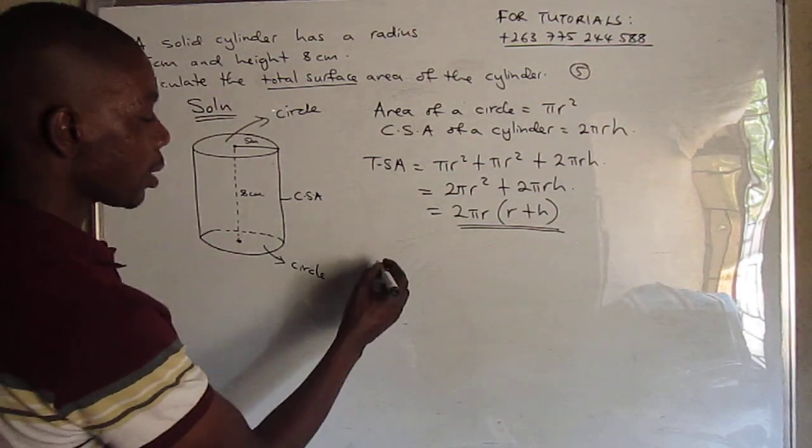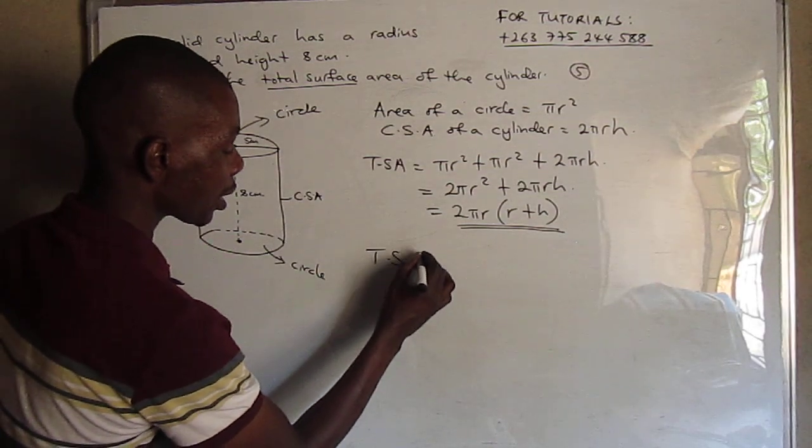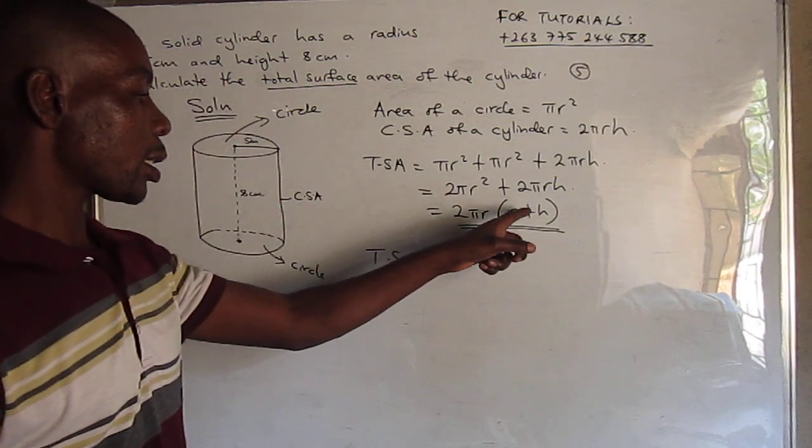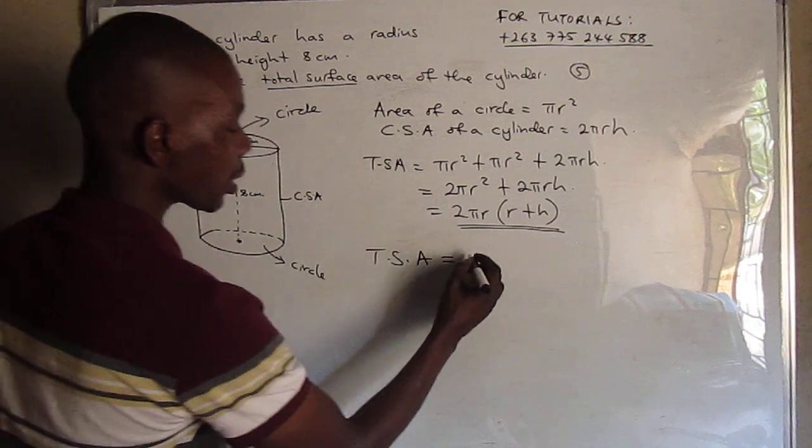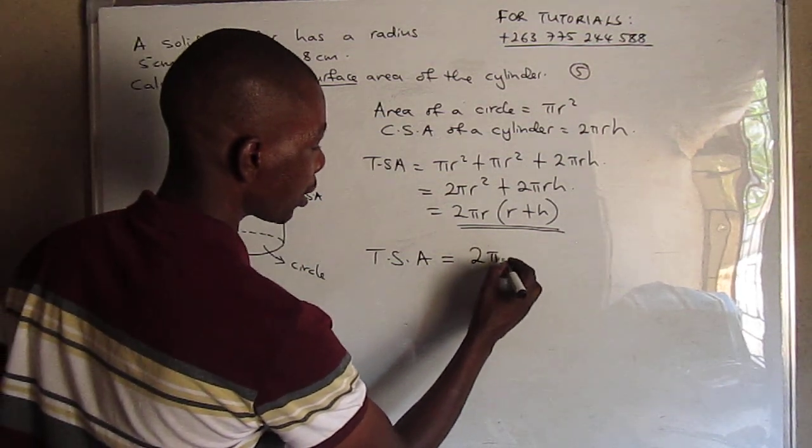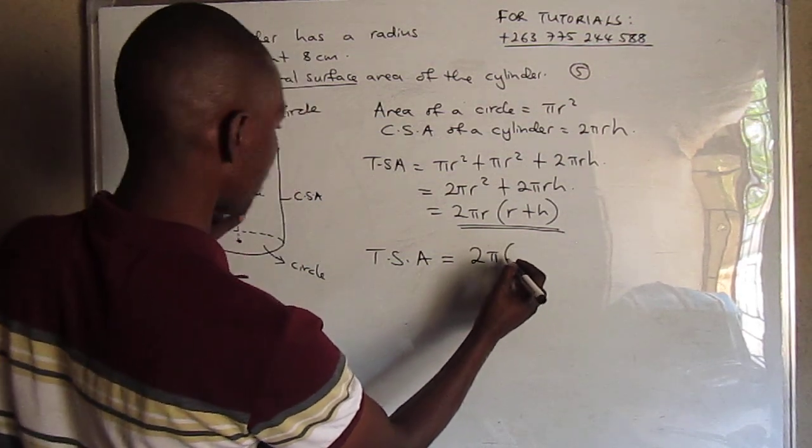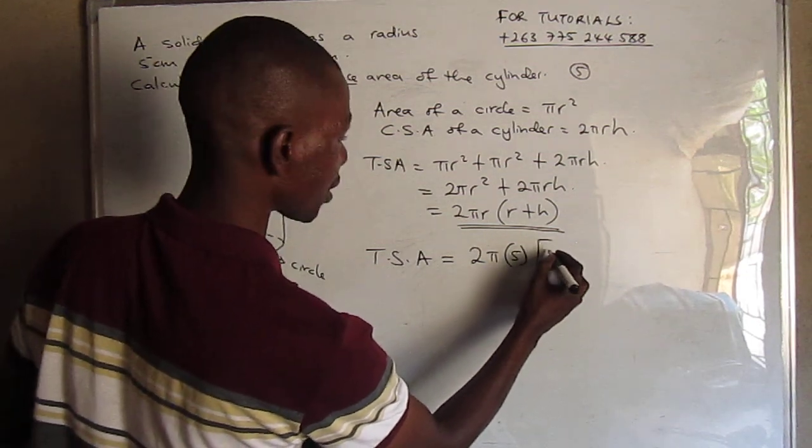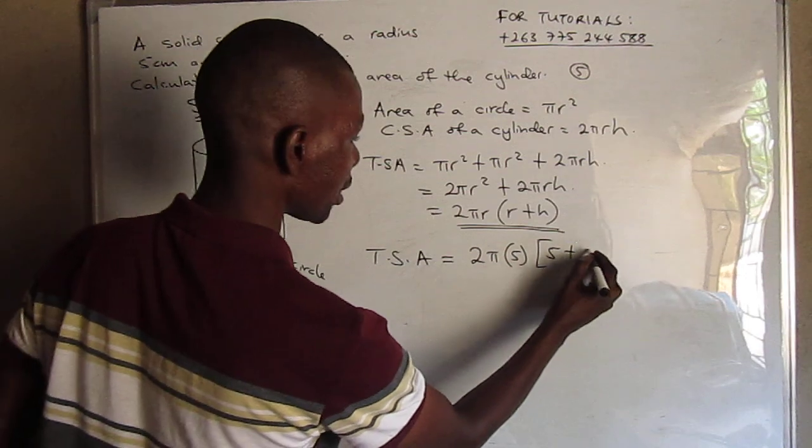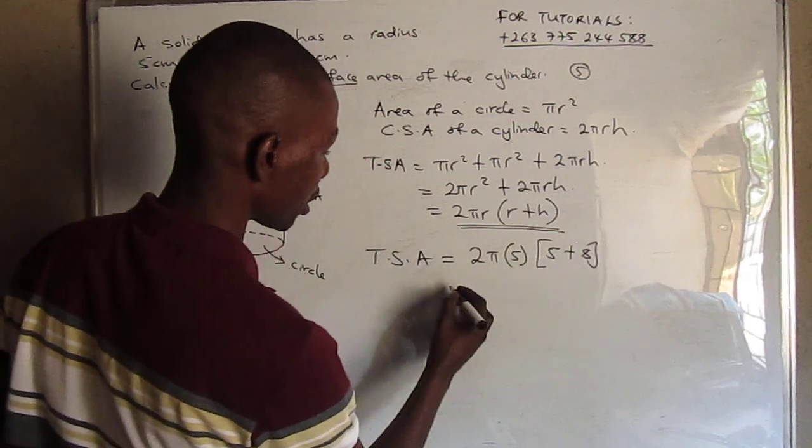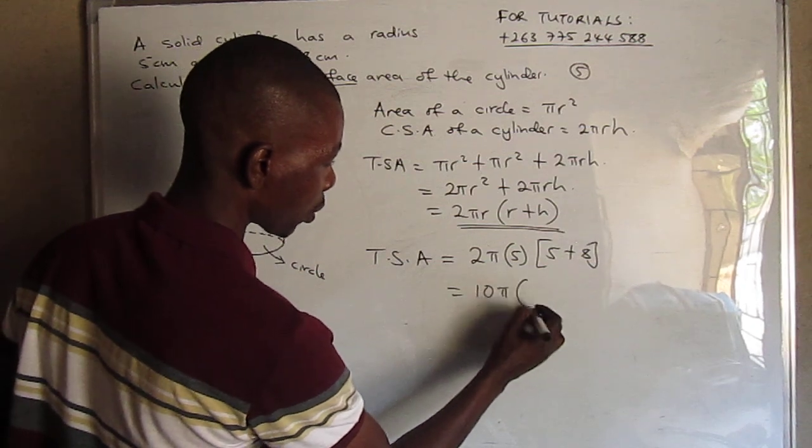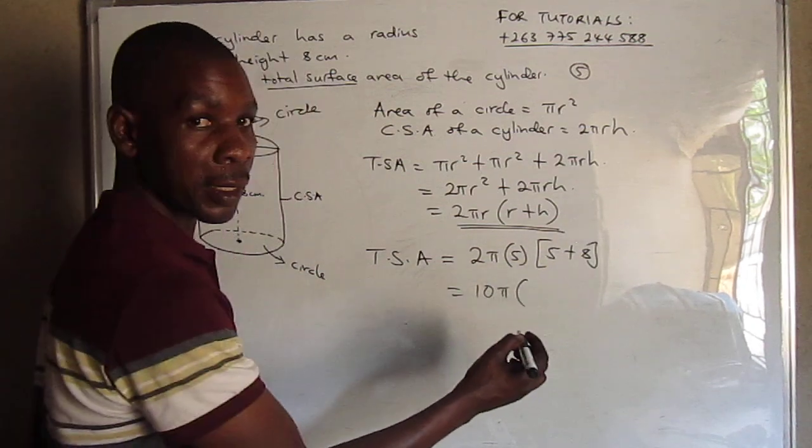So now we can find our total surface area by simply substituting our radius, π, and the height. So in this case, we have 2π times our radius 5 cm, multiplied by radius 5 cm plus height 8 cm, which is equal to 2 times 5, that's 10π, multiplied by 5 plus 8, that's 13.